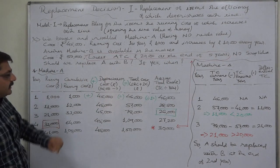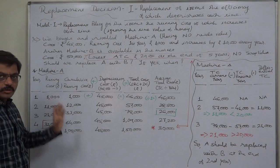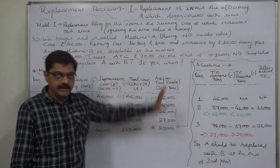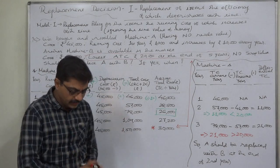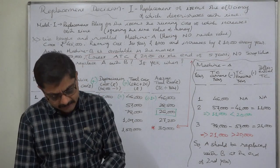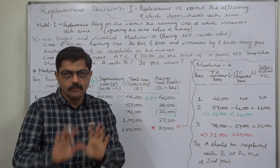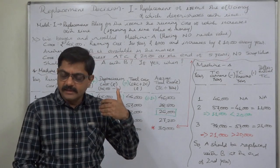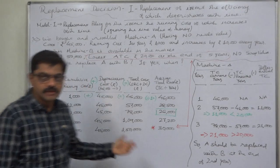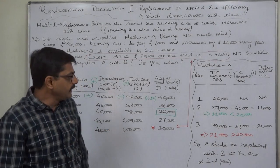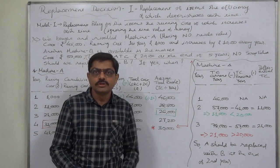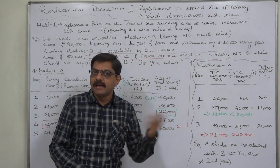The main question is: we have already installed Machine A and are using it. Should we replace A with B, and if yes, when? First, we need to find the optimal replacement policy for Machine A alone — at the end of which year should we replace A. Second, we compare the statistics of A and B to decide whether to substitute A with B or not.